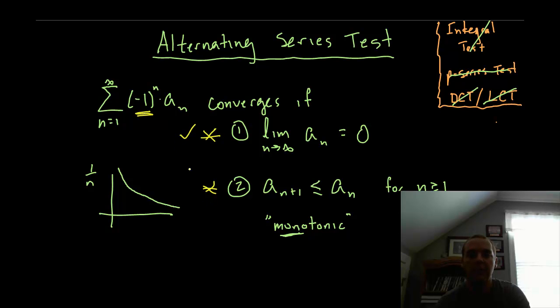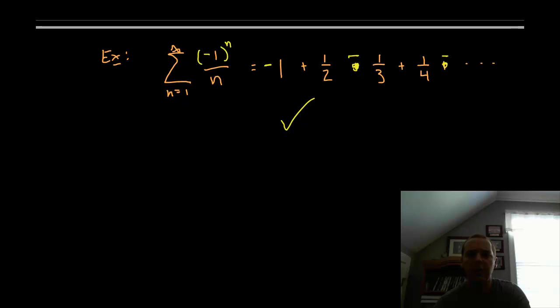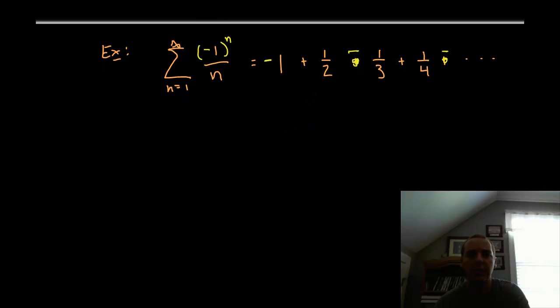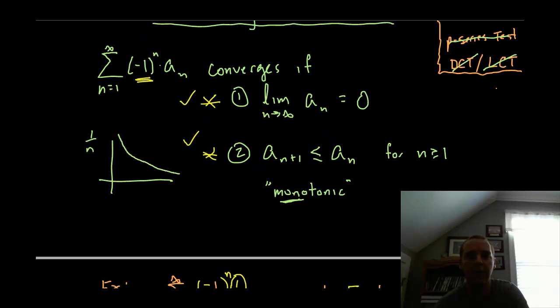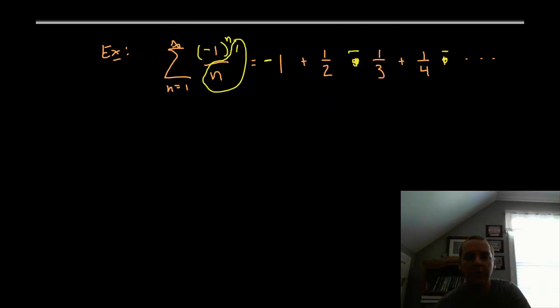You've satisfied the alternating series test. So you just have to check these two things and then you can say that a particular series converges. Looking at this easy example first. If this is our a sub n then we just have to show two things. Actually correction, the whole thing is not a sub n. Just the one over n because remember when you're choosing your a sub n you can leave out the alternating guy.